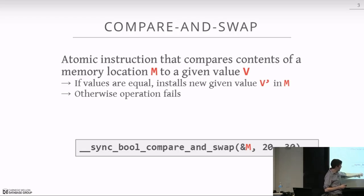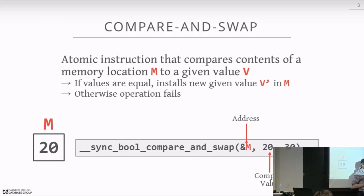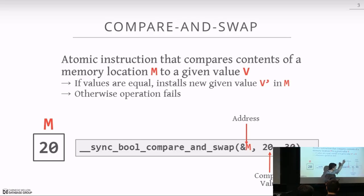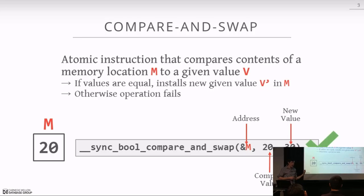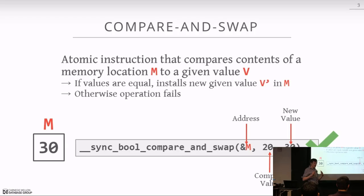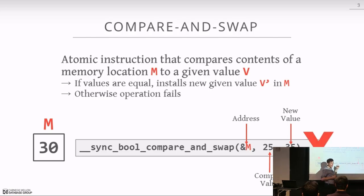For the compare-and-swap function, the first argument is a memory address with some typed value. The second argument is the value we expect to be there, and the third is the new value we want to write if it matches. For example, if we call the intrinsic expecting value 20 and want to write 30, that overwrites it in a single instruction — no mutex lock, no if-clause check. If the value doesn't match, say we compare 25 expecting something different, the intrinsic returns false.